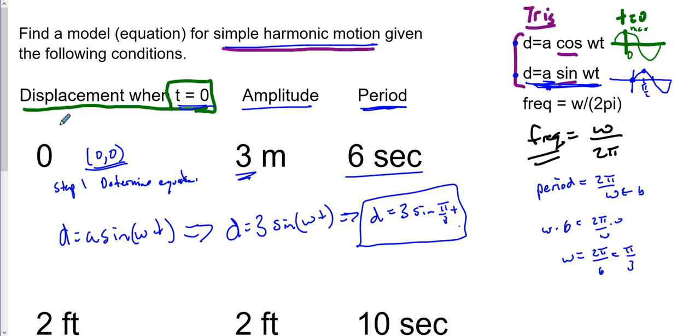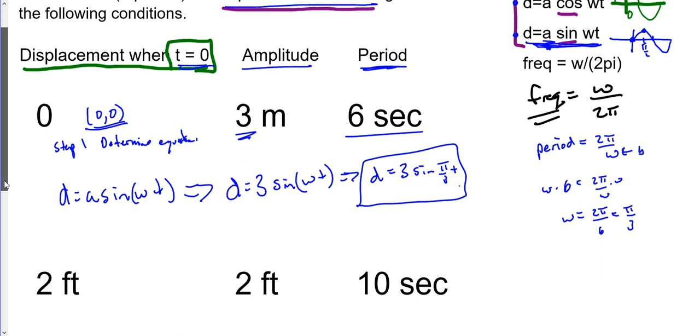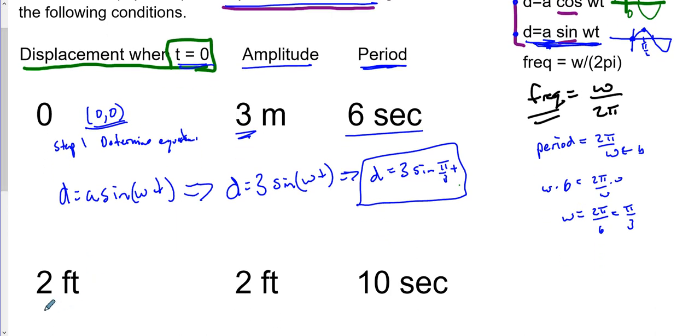Pretty cool, huh? Let's try another one. Our displacement is 2, we have an amplitude of 2, and a period of 10. If you want to try this out, we'll go through the answer in just a bit. If you didn't pause the video, pause it and do this.